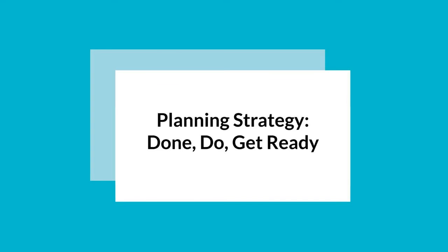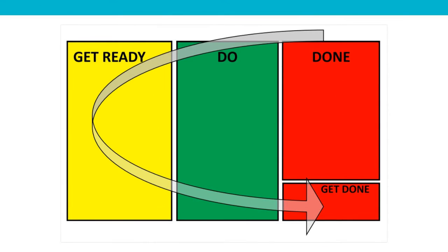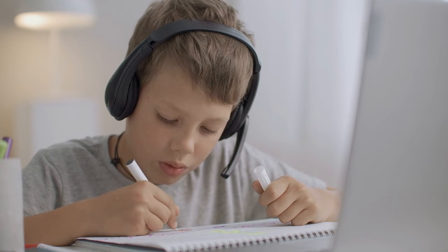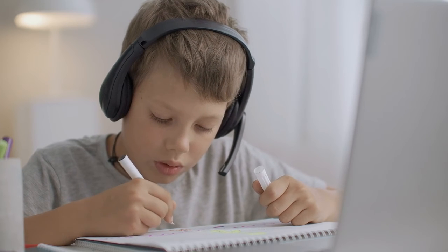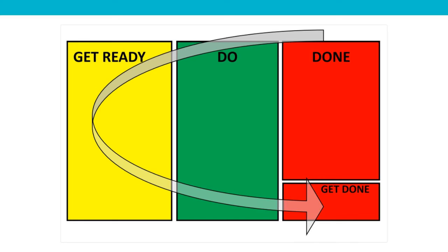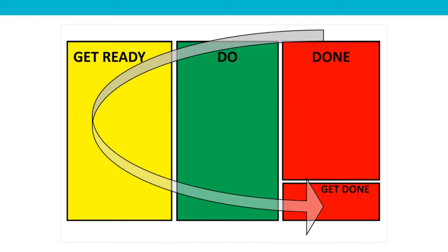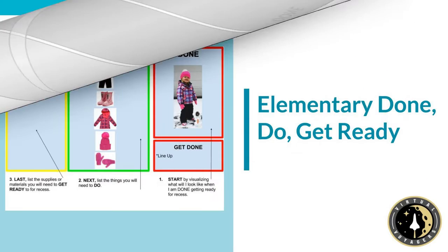The planning strategy Done-Do-Get Ready, developed by Sarah Ward, provides a concrete template for beginning with the end in mind and working backward for task completion. Students always begin with Done — by visualizing, writing down, or sketching the end product or result. Next, we move to Do and outline the specific steps required to complete the task. Then comes Get Ready, in which we identify the needed materials, supplies, or resources. Once we work backward to make the plan, we are ready to move forward and work the plan by gathering supplies and following the steps for completion.